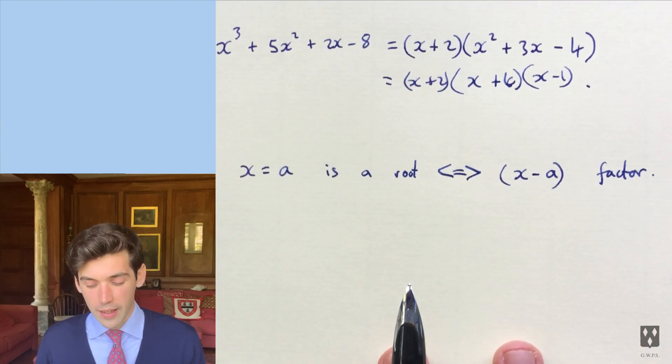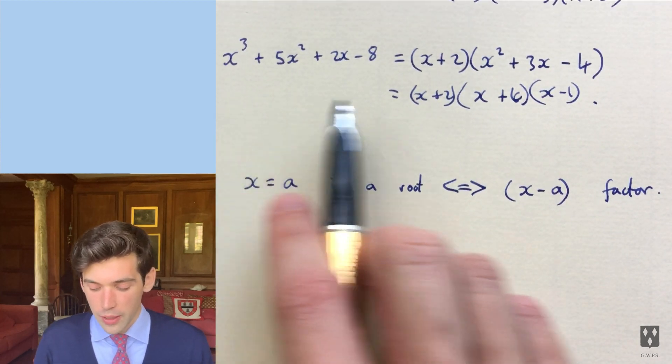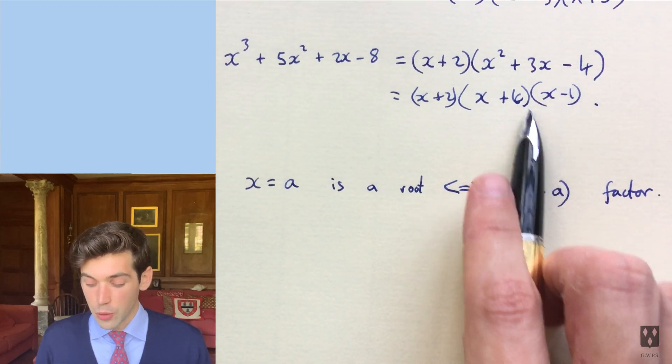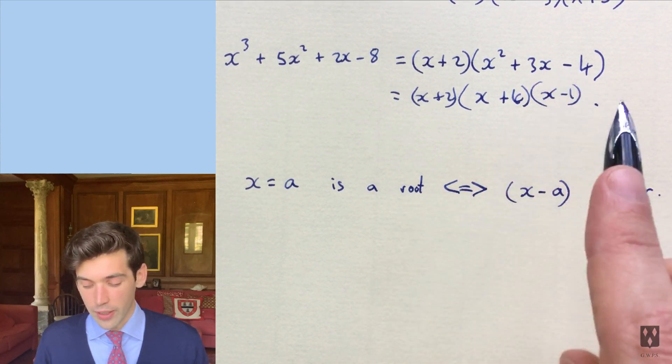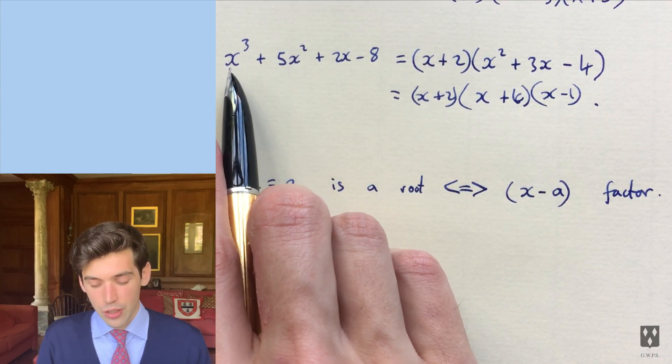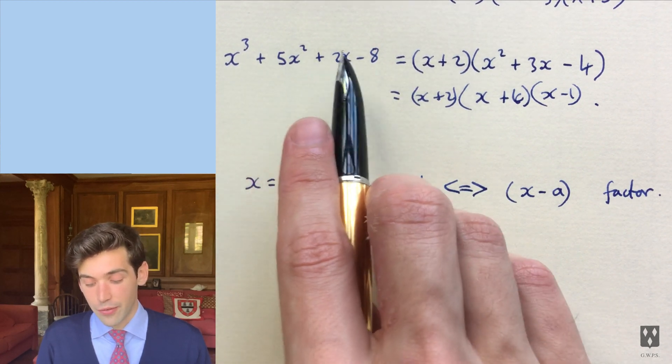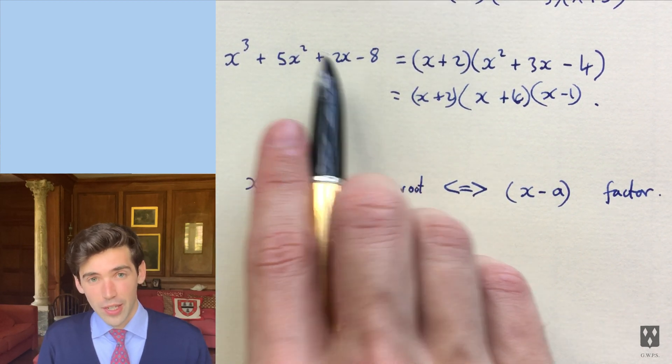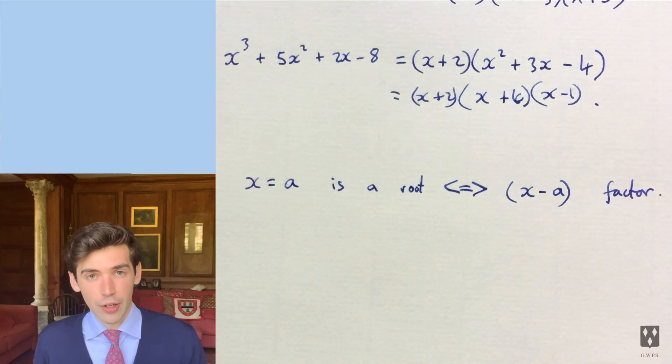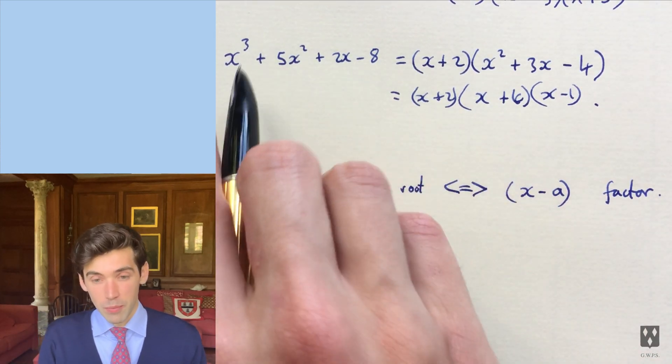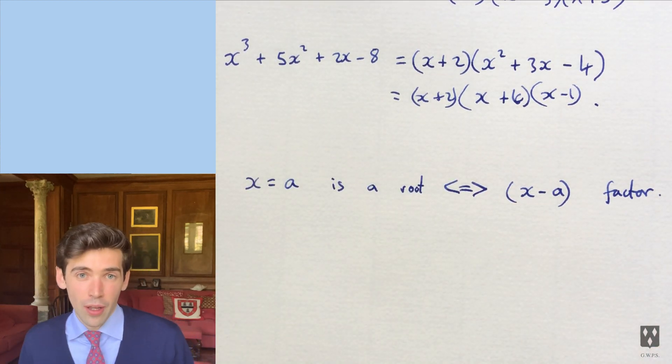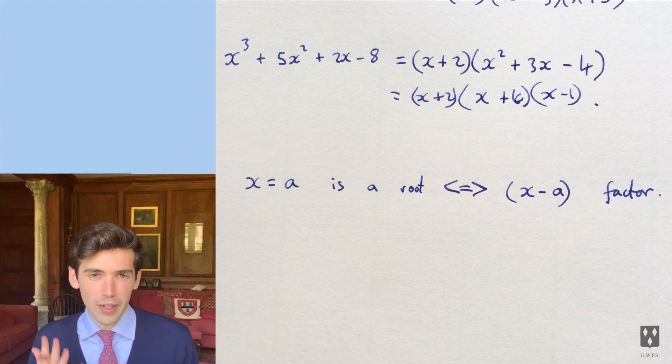So for example, we could just check here in this example that 1 should be a root because x minus 1 is a factor. And we can check that very quickly by substituting 1 in here. So we put 1 in, we get 1 cubed is 1 plus 5 plus 2, and that's 8. And then you subtract 8 and that gives you 0. So it does work. And you can check that with the 4, or rather putting minus 4 in, and if you put minus 2 in. And if you ever have to do that, you just have to substitute those in. And you can use a calculator if you want, but it doesn't matter. You just have to put that in and show it.